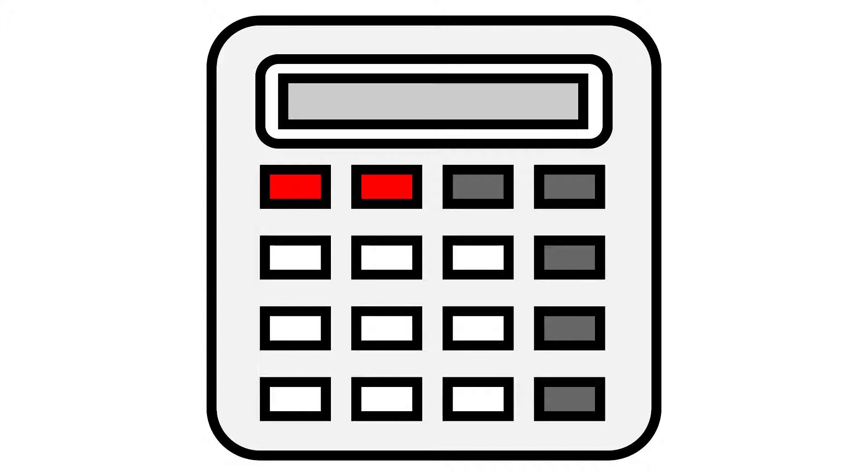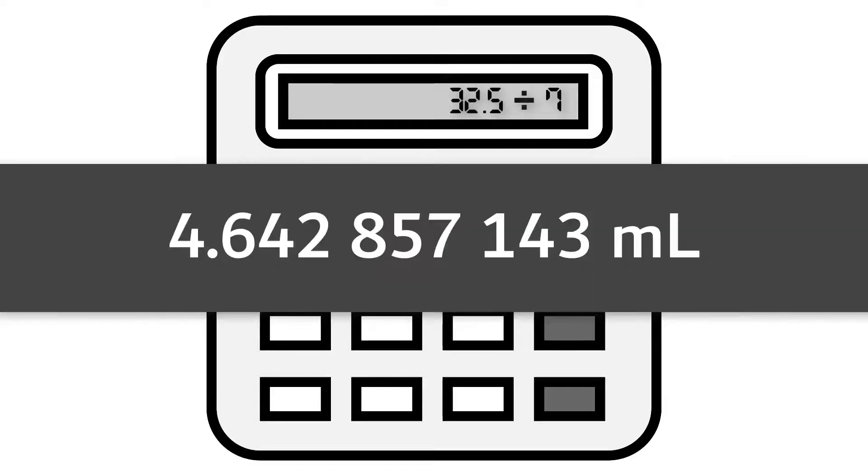Using a calculator, you calculate the size of each sample by dividing 32.5 milliliters by seven and you end up with the number that you see on your screen.